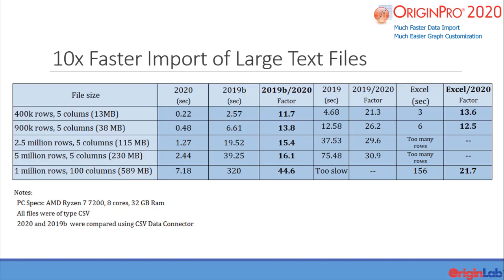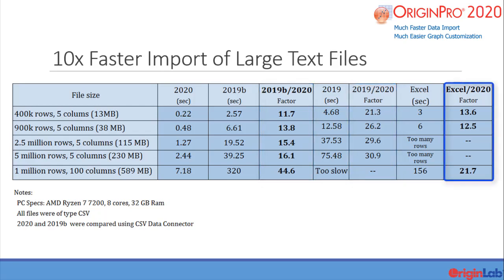Importing large text files has been significantly improved in this version. Import speed has been improved by a factor of 10 or more as compared to previous versions of Origin and as compared to Excel 2016. This was done by making full use of the processor's multi-core architecture.